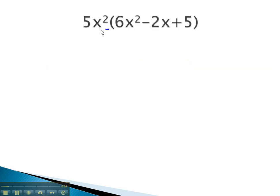In this problem, we have the 5x² in front of the parentheses. We will first distribute it onto the 6x². 5 times 6 is 30, and then on the x's, we know we must add the exponents, giving us x to the 4th.